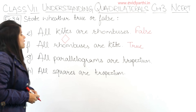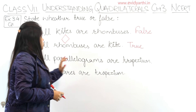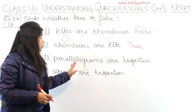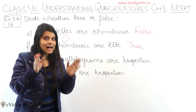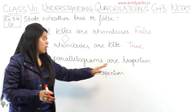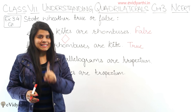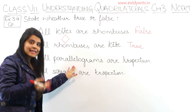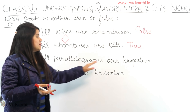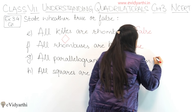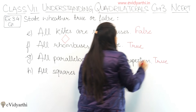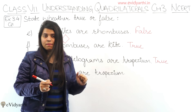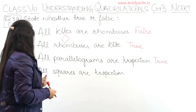Next we have: all parallelograms are trapezium. In a parallelogram, both pairs of opposite sides are parallel. In a trapezium, at least one pair of sides is parallel. Since a parallelogram has all sides parallel, the trapezium condition is satisfied. Also, the diagonals bisect each other in both. So this is true.